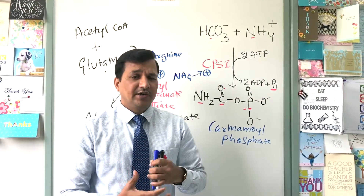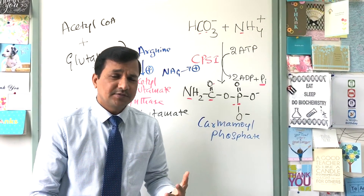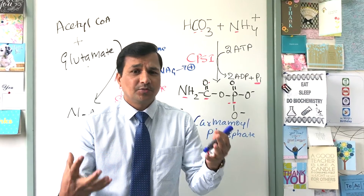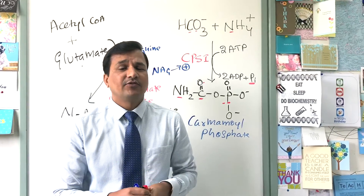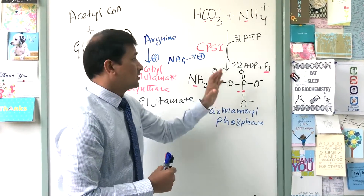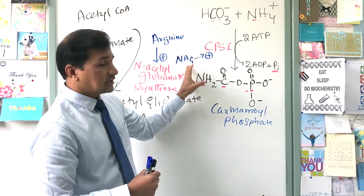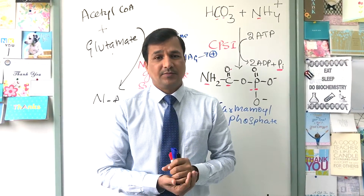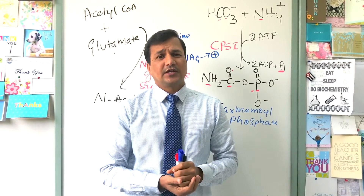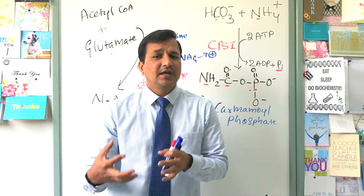Citrulline moves out of the mitochondria and enters the other reactions of the urea cycle. Whenever a person is in prolonged fasting or has high protein intake, there is too much substrate available and all five urea cycle enzymes will be induced. Additionally, when acetyl-CoA, glutamate, and arginine levels increase in the mitochondrial matrix, all three increase synthesis of N-acetyl glutamate, which acts as a positive modulator on CPS1 — this is the main control on the urea cycle.